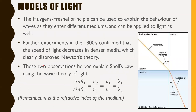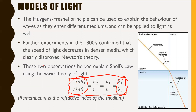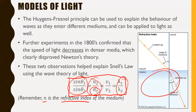The Huygens-Fresnel principle can be used to explain the behavior of waves as they enter different mediums and can be applied to light as well. We talked about how light can refract when it enters a different medium of a different density, and with that we discussed something called Snell's law. Snell's law is this chain of equations where you can mix and match whichever equations you'd like to use. Just a reminder that N in these equations represents the refractive indexes of the mediums, and the refractive index part has N2 on top — that is on your formula sheet.